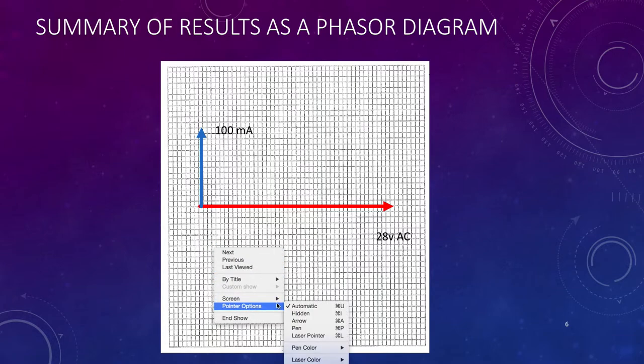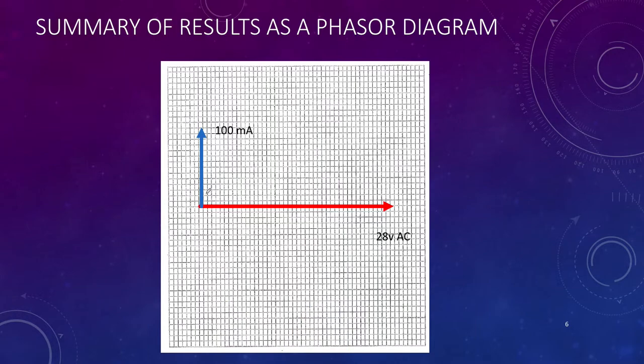And we draw it at 90 degrees, because 90 degrees is a right angle. And we end up with this right angle in here, which of course is our 90 degrees. So that's the phasor representation.